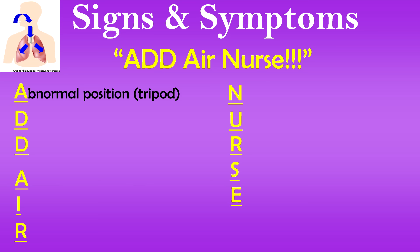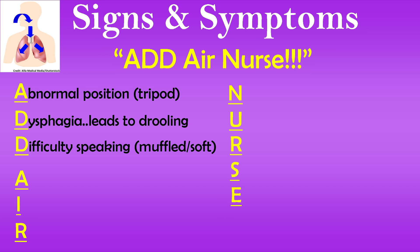D is for dysphagia — difficulty swallowing, which we discussed earlier, and this leads to the drooling you may see. The other D is difficulty speaking — their voice may be muffled or soft, again due to the close relationship between the epiglottis and the vocal cords, the difficulty swallowing, the drooling, and all the inflammation going on.